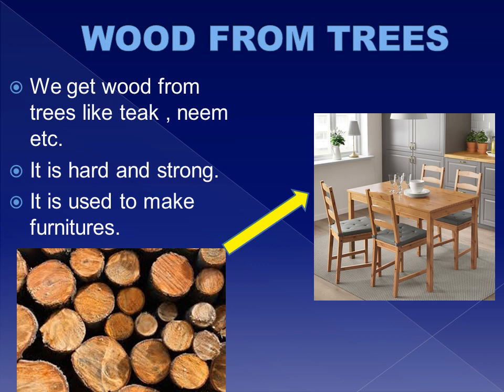Let us see in detail about the materials we get from nature. We get wood from trees like the teak tree and neem tree. It is hard and strong. It is used to make furniture like chairs, cupboards, cots, tables, etc.